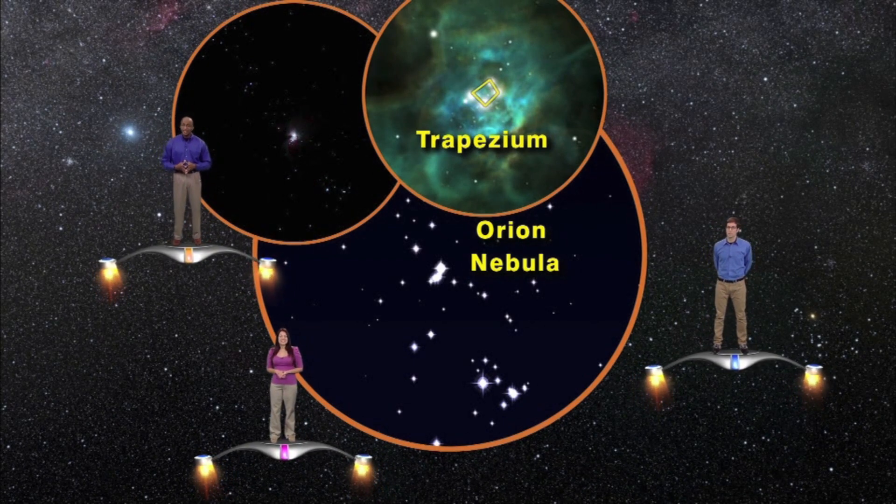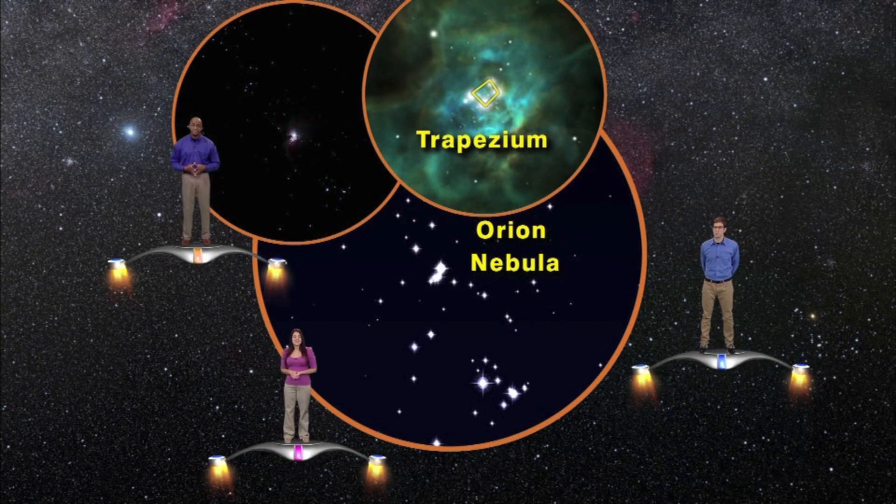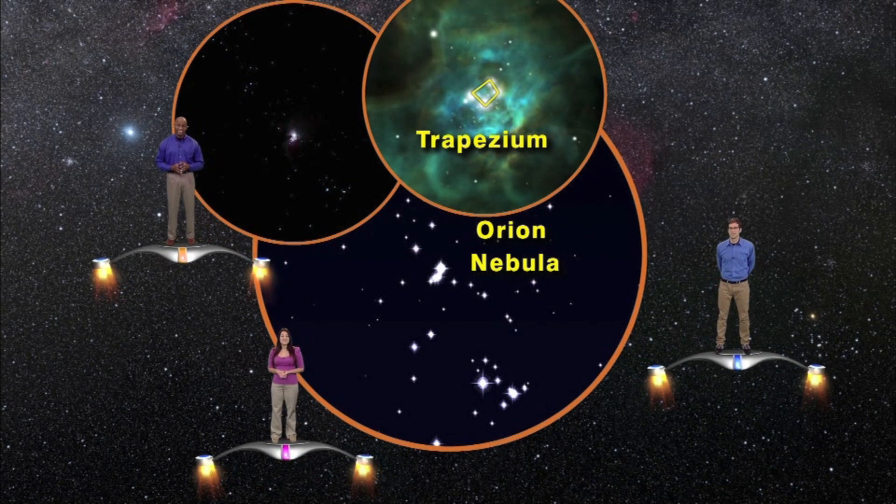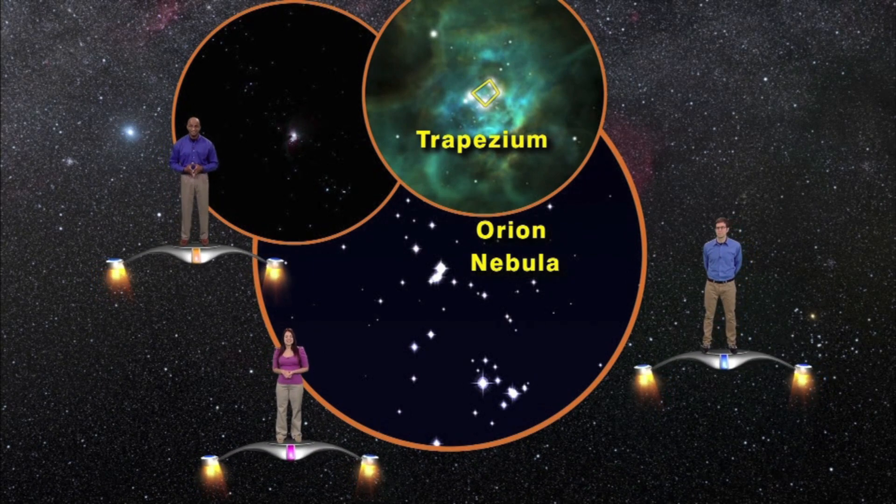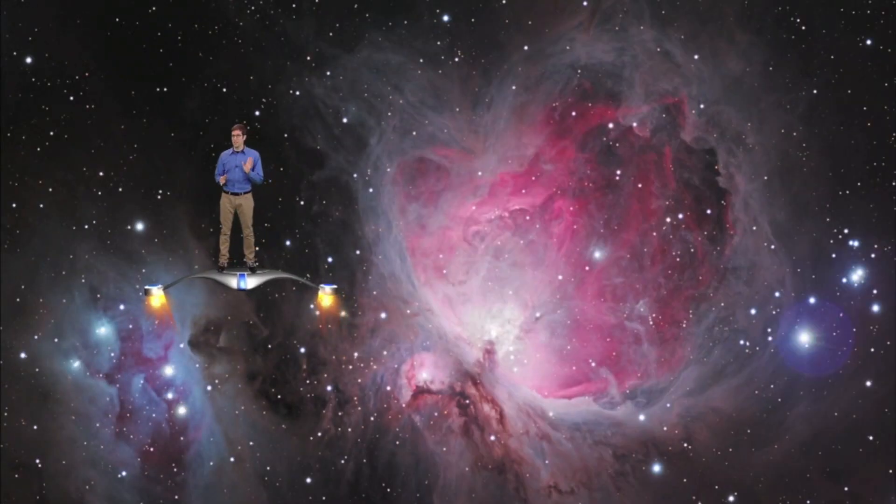Now, although the Orion Nebula looks like a tiny Q-tip shaped cloud through a pair of binoculars, in reality its size is mind-boggling. Believe it or not, there's enough material in this nebula to produce over 10,000 stars the size of our sun.